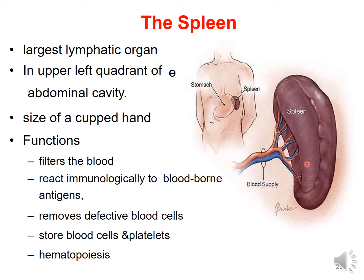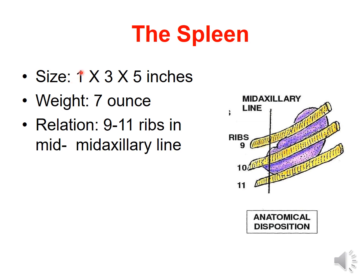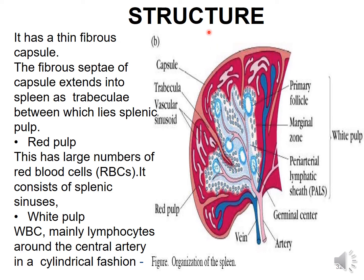The spleen has a size of 1×3×5 inches, weighs 7 ounces, and is located between the 9th and 11th ribs in the mid-axillary line. Like other lymphoid organs, it has a fibrous capsule. Extensions of the capsule into the parenchyma are called trabeculae, as seen in lymph nodes.